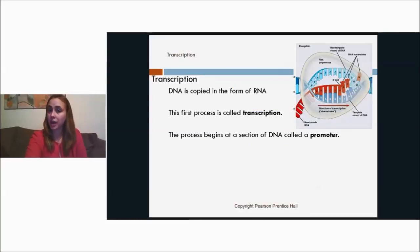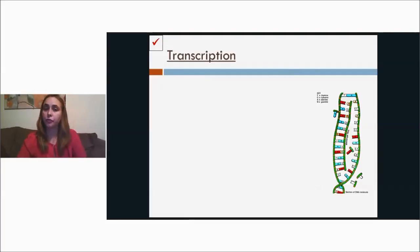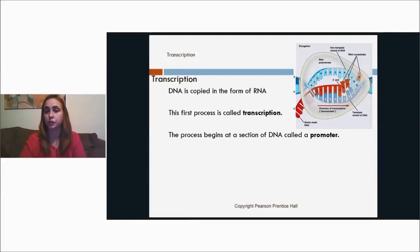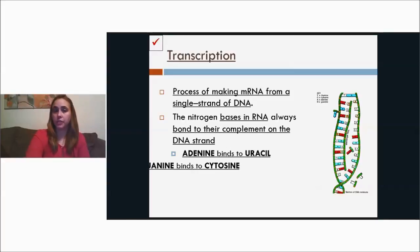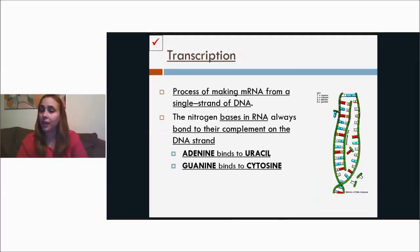So transcription is when DNA is copied in the form of RNA, and the first process is called transcription. The process begins at a section of DNA called a promoter. The promoter is also known a lot of times as the TATA box because it is T-A-T-A-A-A-A on one side, then it would be A-T-A-T-T-T-T on the other. So that segment of DNA, when you have that message, the TATA box, that's where it tells the enzymes to connect and start making the RNA molecule. The process of making mRNA from a single strand of DNA is called transcription, and the nitrogen bases in RNA always bond to their complement on the DNA strand.